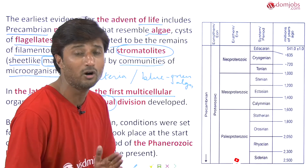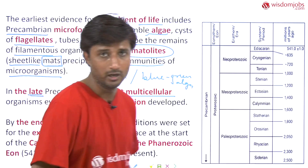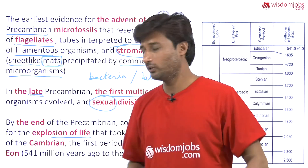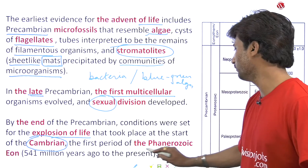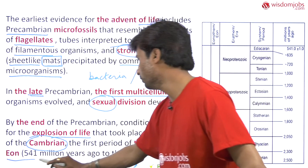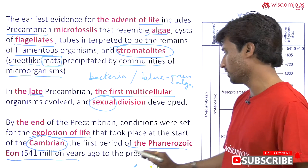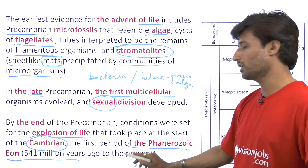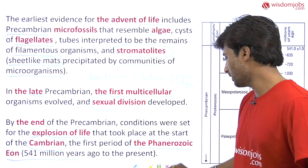By the end of the Pre-Cambrian, conditions were set for the explosion of life. However, the explosion of life actually took place at the beginning of the Cambrian period, not Pre-Cambrian. This marks the first period of the Phanerozoic Aeon, which begins around 541 million years ago and extends to the present. That is where the explosion of life occurred.